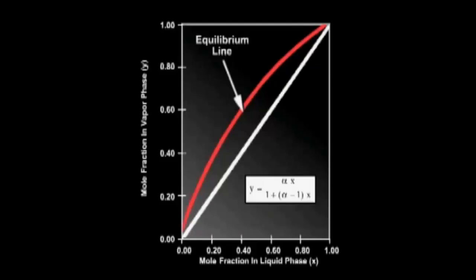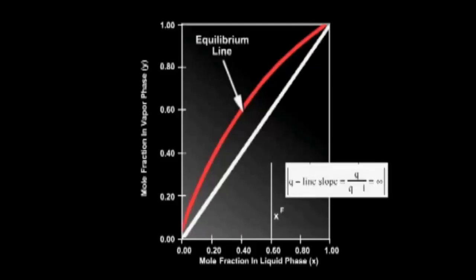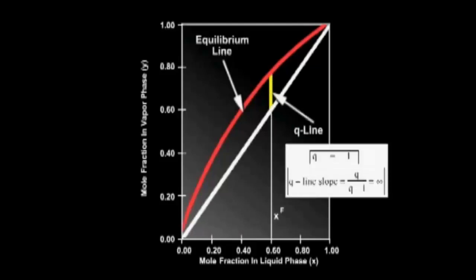Next, we will draw the Q line. Since the feed is at the bubble point, the value of Q is equal to 1, and consequently the Q line is vertical. We draw the Q line from the point on the 45-degree line which corresponds to the feed mole fraction, 0.6, vertically to the equilibrium line.